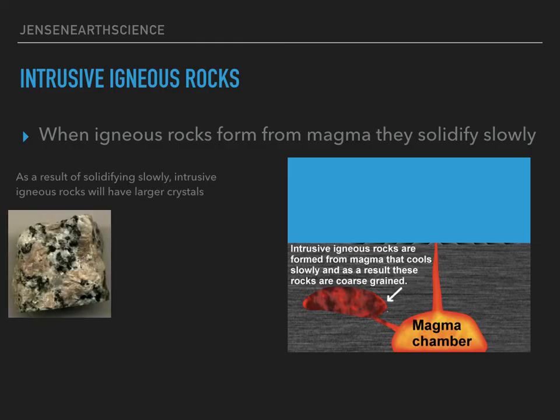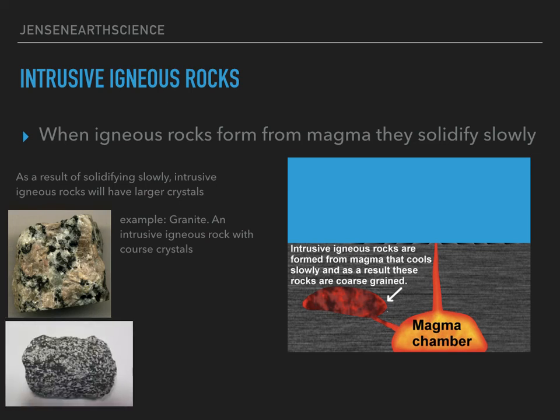Here's an example of granite — you might have seen this on maybe a kitchen counter. It is an intrusive igneous rock with coarse crystals or large crystals. All those specks that you see there are the granite's larger or coarse crystals. This next rock is called diorite. It's another intrusive igneous rock with coarse crystals, or large crystals, as well.